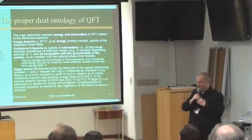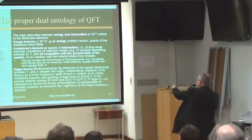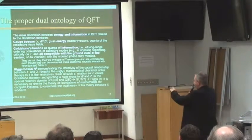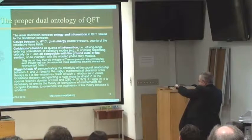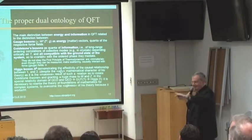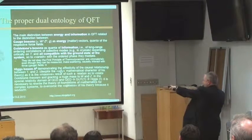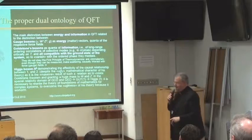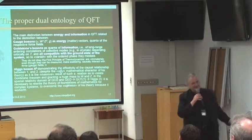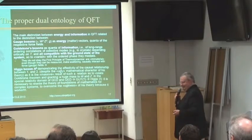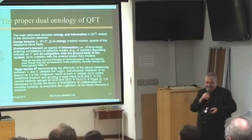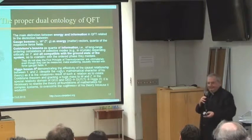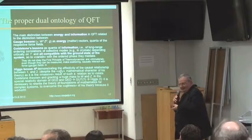Despite the ugly mathematical character of Higgs' theory, a friend of mine who spoke with him just last week said it is necessary to rewrite the theory of foundational mathematics for complex systems to overcome the ugliness of this theory — because it experimentally works, so it is mathematics that must change. It is like, in a long time, inventing the calculus for classical mechanics: the calculus works, so we have to change mathematics, not physics.